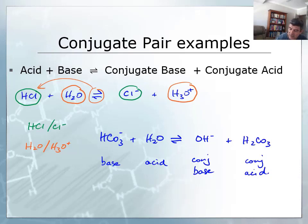You can then write them afterwards so that we've got HCO3- and H2CO3 are going to be one pair. And over here H2O and the OH- are going to be another conjugate pair.